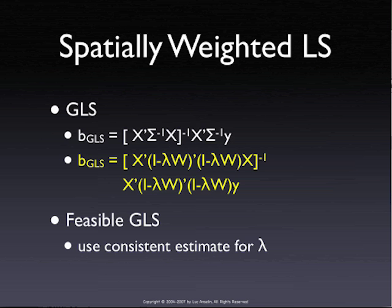As we saw yesterday, if the error is moving average, then we're in trouble, because we don't have the simplifying result that gives us spatially filtered variables. Instead we have a big inverse in the middle: x-prime times (I plus rho W plus W' plus rho-squared W W'), that whole thing inverted — which is the inverse of an N-by-N matrix. That's going to be near impossible to do.